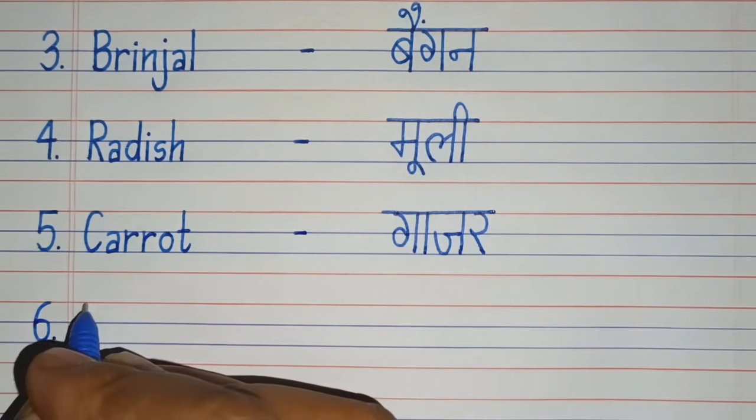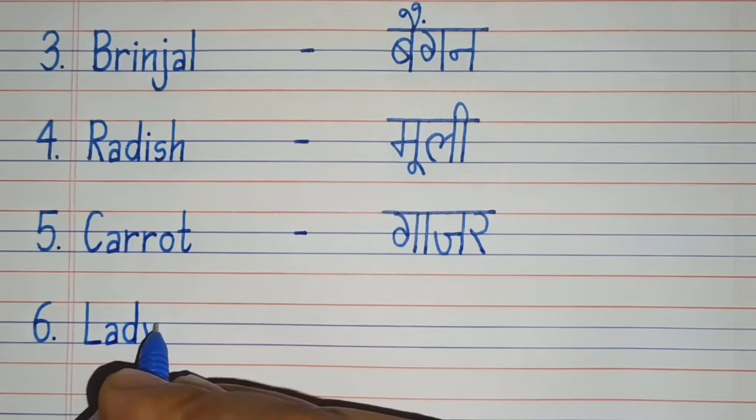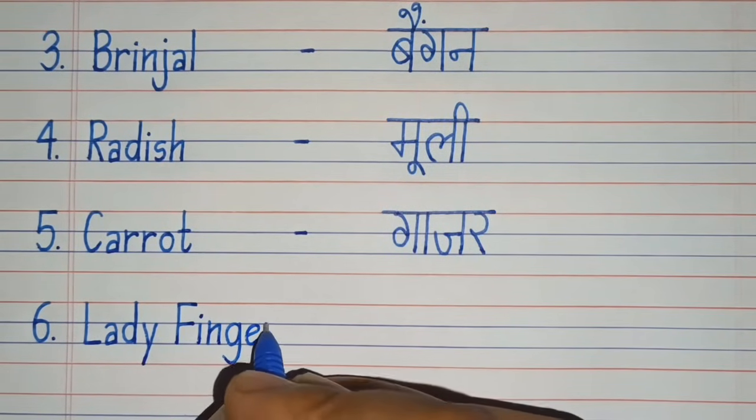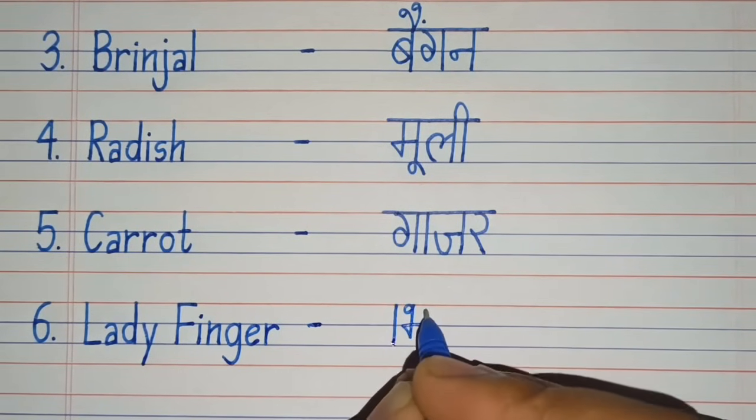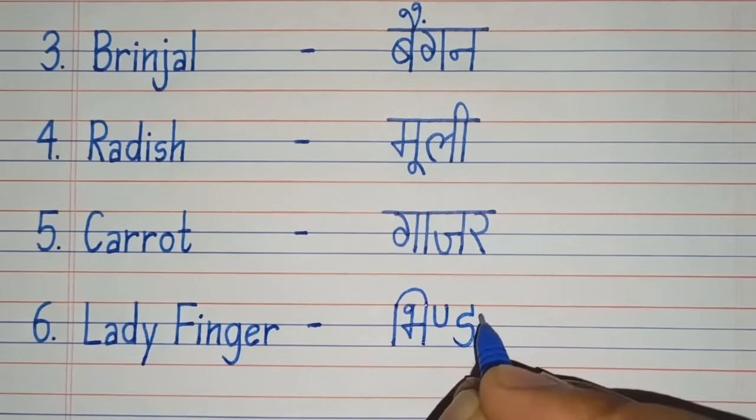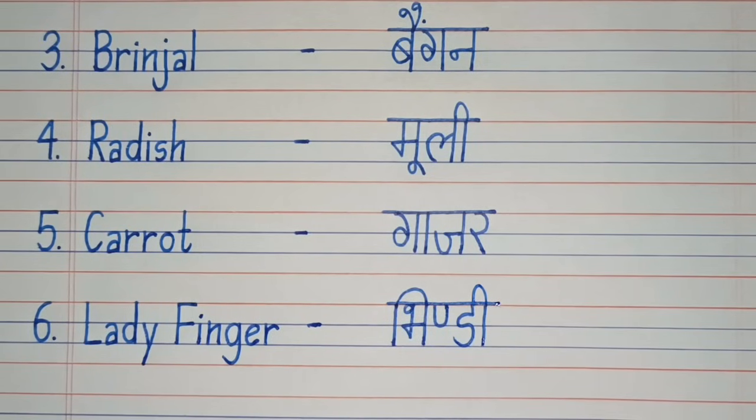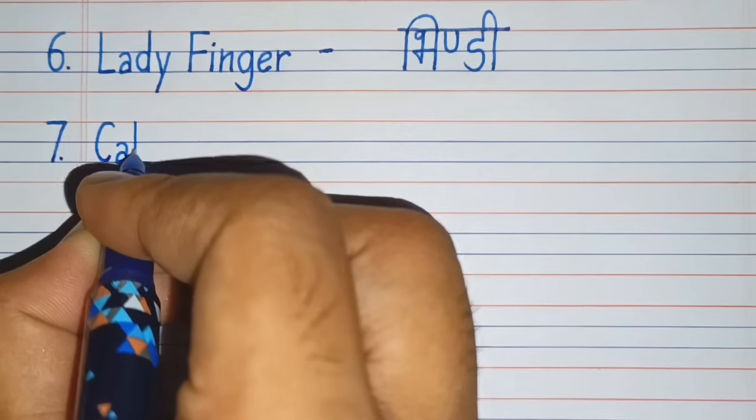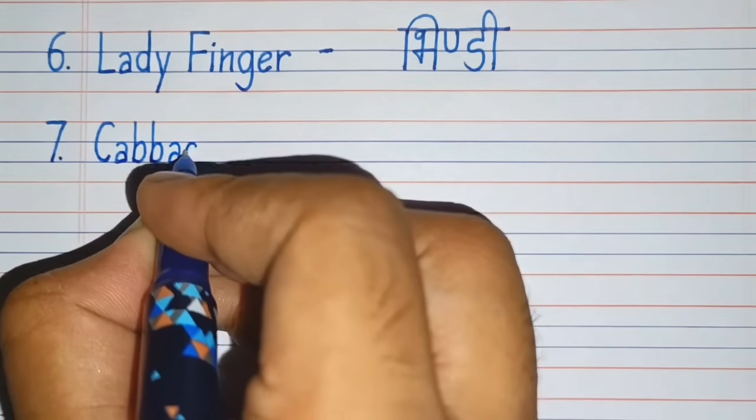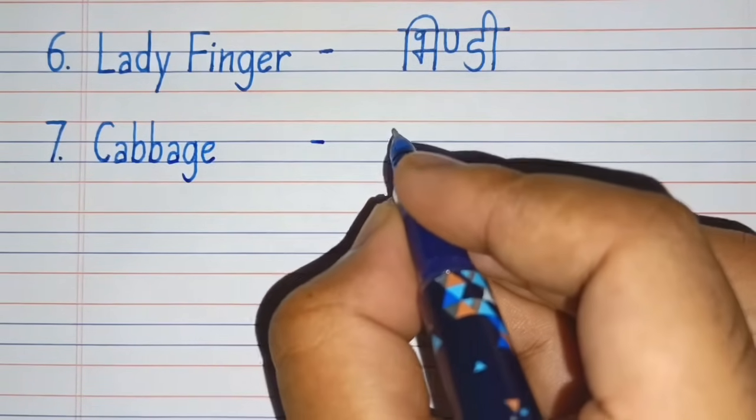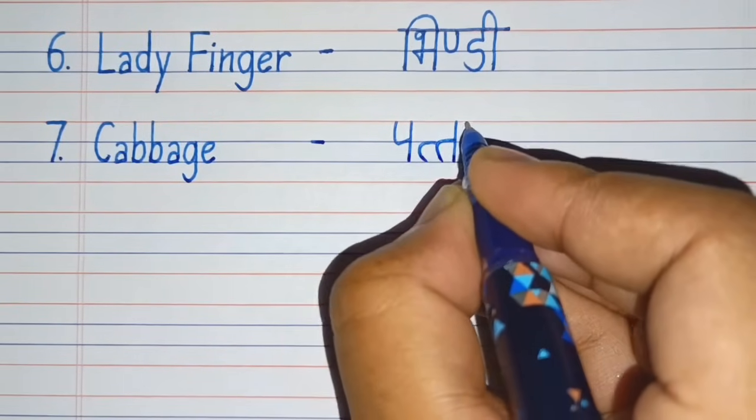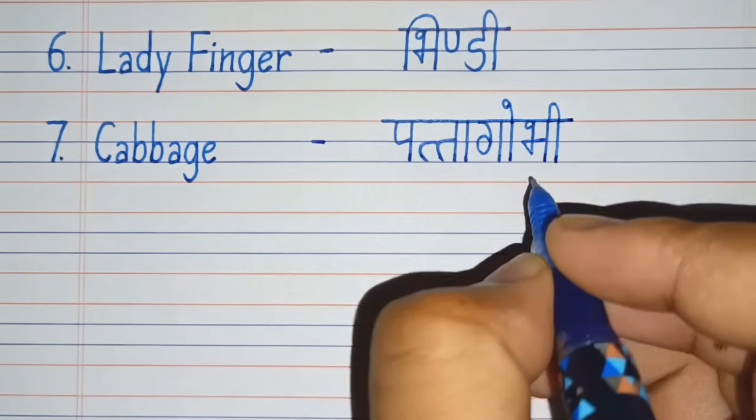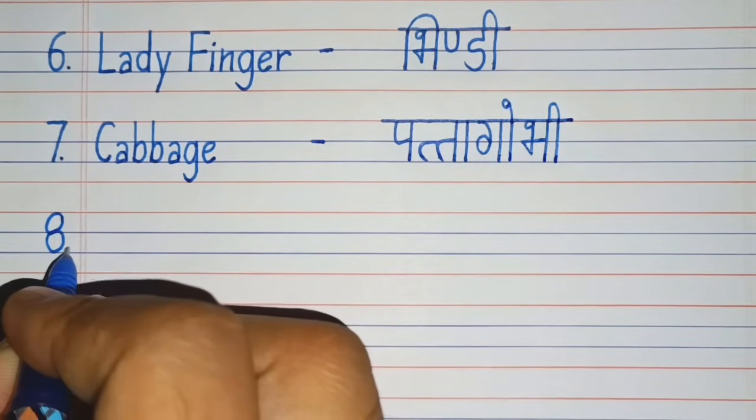Sixth number. L-A-D-Y, Lady, F-I-N-G-E-R, Finger. Lady Finger. Lady Finger means Bindi. Seventh number. C-A-B-B-A-G-E, Cabbage. Cabbage means Pattagobhi.